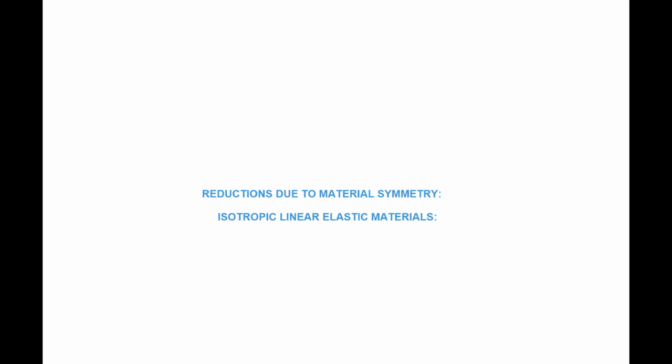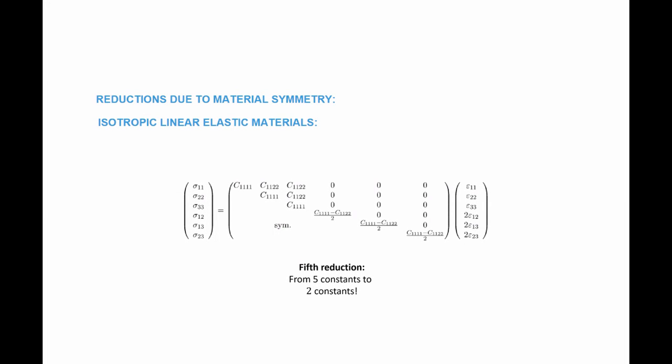We can further reduce the number of constants from five for linear elastic isotropic materials. For isotropic linear elastic materials, only two constants are needed to describe the relationship. The relationship between stress and strain for isotropic linear elastic materials is independent of the coordinate system — if I know those two constants, I know the matrix and can use it in any coordinate system without change.